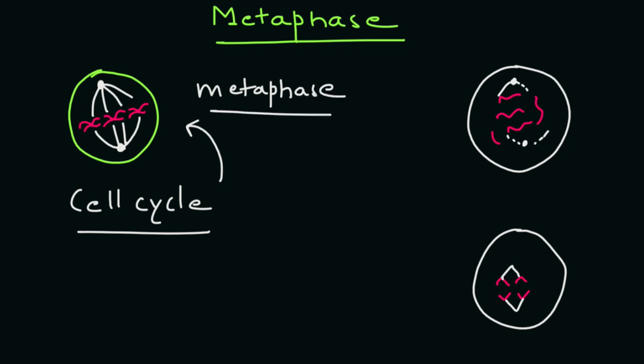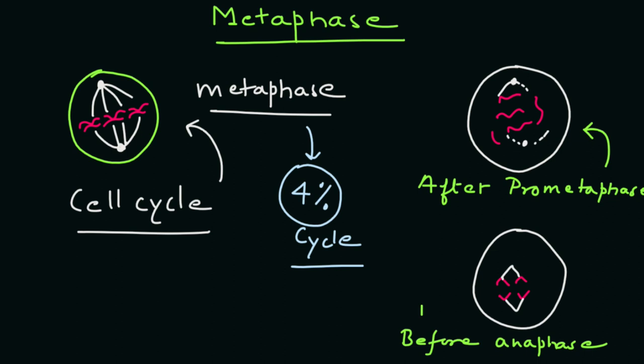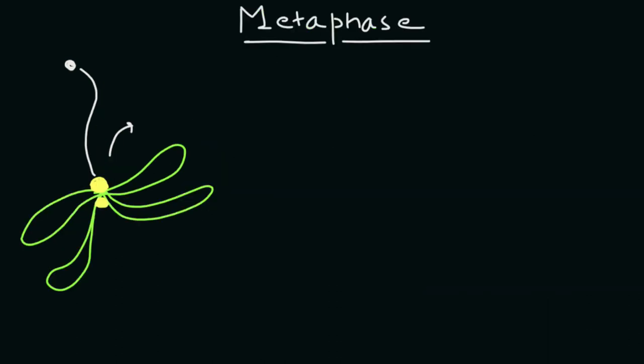Metaphase lasts for around 4% of the total time of the cell cycle. This stage comes after the prometaphase stage and before the anaphase stage of mitosis. In this stage, the microtubules that were formed in prophase have already connected to the kinetochores.